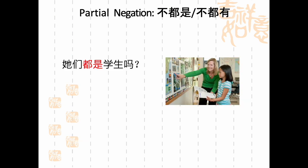Let's look at the partial negation a bit more. If I asked you 他们都是学生吗 — are they both students? Looking at the image, we know we have one student here, but the other person seems to be a teacher. So we would use the partial negation and say 他们不都是学生.